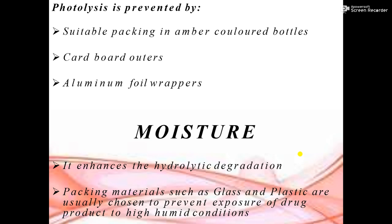Now, how is photolysis prevented? Photolysis can be prevented by suitable packaging such as amber colour bottles, cardboard outers, or aluminium foil wrappers. This will prevent photolysis, and the chances of degradation will be minimized.